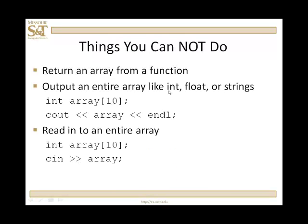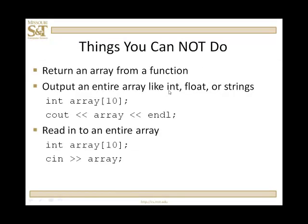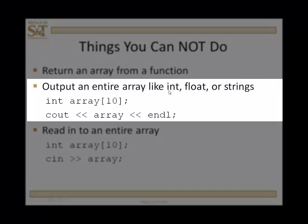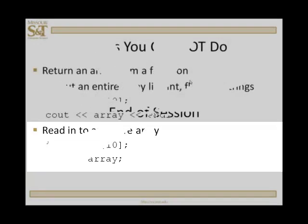There are some things that you cannot do with an array. Number one, you cannot return an array from a function through the return statement. Now, you can pass arrays to functions and have them come back changed. We'll describe that in the next lesson. But you cannot return an array from a function like you return an int or a float or a character. Secondly, you can't output an array like you do any other variable. Nope, don't try that. It's bad news. It won't work. You can't read into an array like you can some other variables. Nope, don't do that either. It's bad. It will not compile.